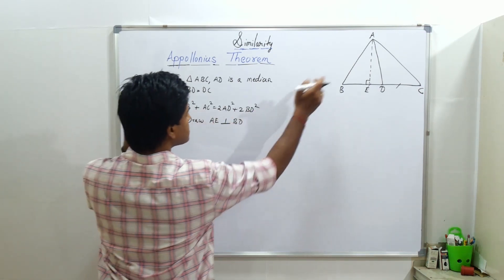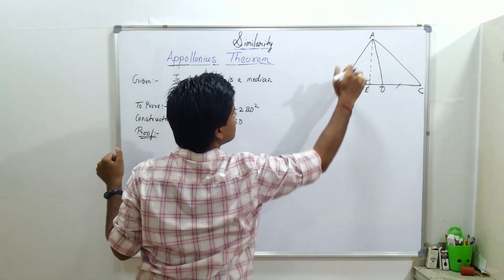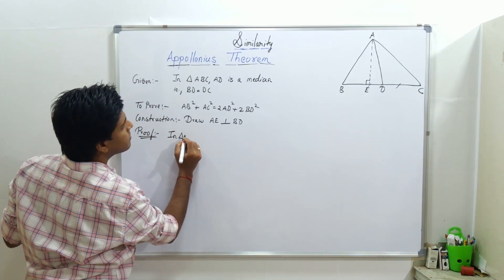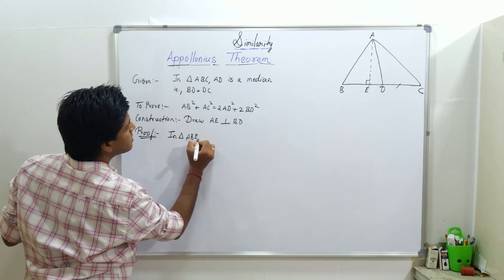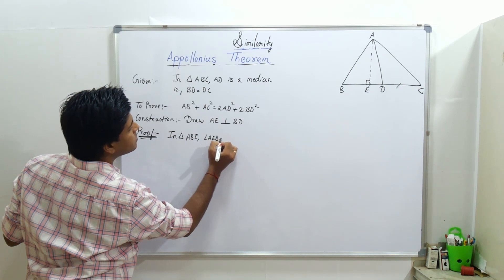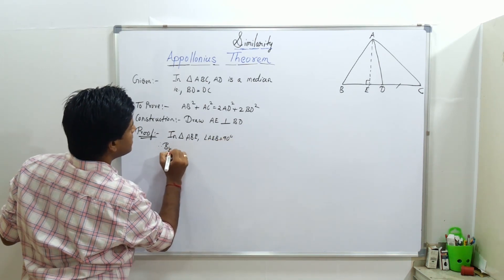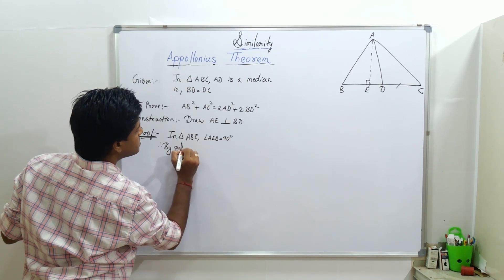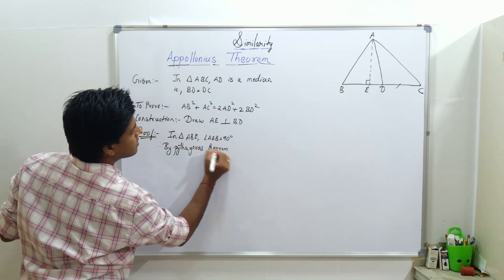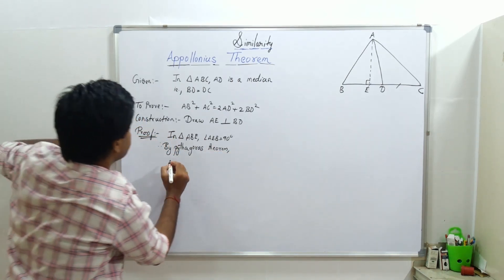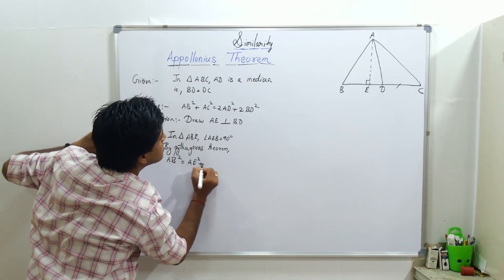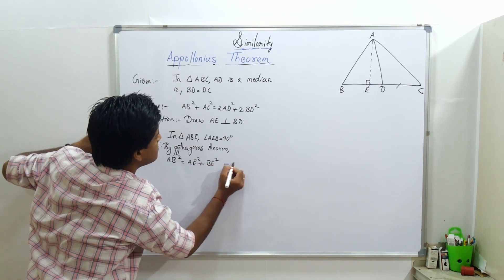Now let's start. To get AB square and AC square, I will apply Pythagoras in triangles ABE and ACE. So in triangle ABE, angle AEB equals 90 degrees. Therefore, by Pythagoras theorem, AB square equals AE square plus BE square. This is our first equation.